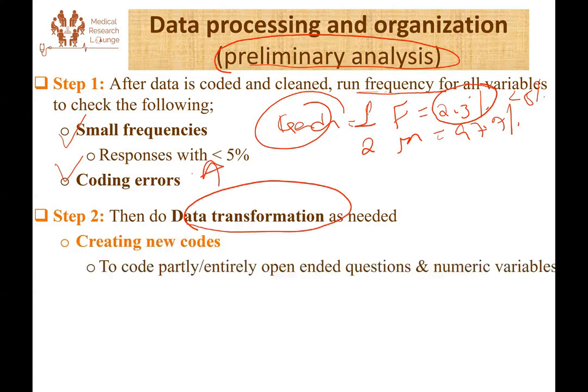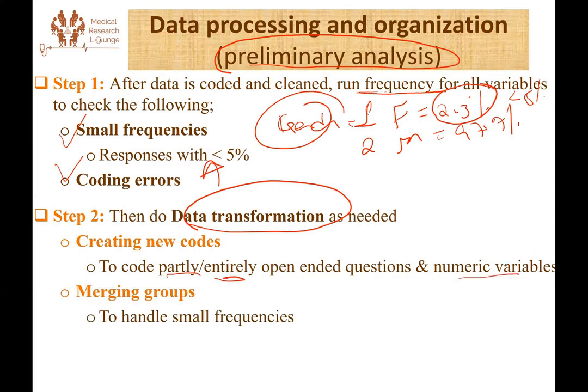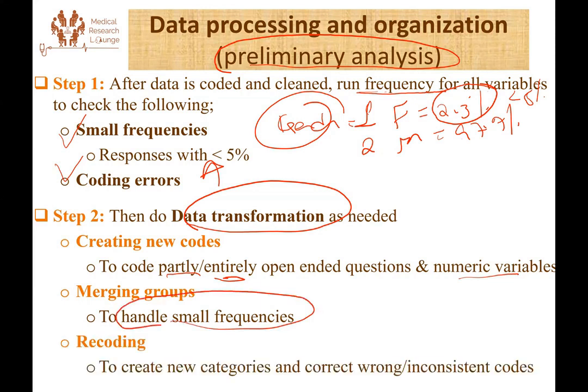Data transformation can involve creating new codes, especially for partly or entirely open-ended questions and numeric variables. Or it could be merging groups of responses to handle small frequencies. Or it could be recoding — we may have originally coded our data based on prior understanding, but after the data is collected, we might need to do a recategorization and recoding.